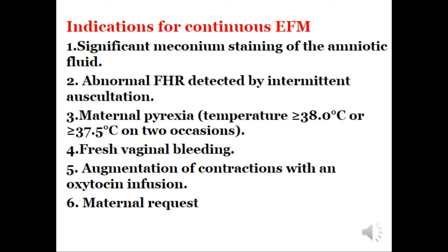Indications for continuous fetal heart rate monitoring: 1. Significant meconium staining of the amniotic fluid. 2. Abnormal fetal heart rate pattern detected by intermittent auscultation. 3. Maternal pyrexia — temperature equal to or more than 38°C, or equal to or more than 37.5°C on two occasions. 4. Fresh vaginal bleeding. 5. Augmentation of contractions with oxytocin infusion. 6. Maternal request.